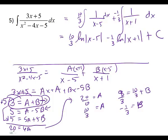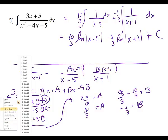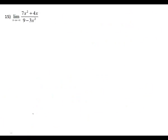I think I'm going to do 15 and then 10, and then you guys can pick from there. Go down to the bottom. So if I was to put in the infinity, don't I end up with infinity over infinity? Which is indeterminate. So what do we need to do? L'Hôpital's rule.